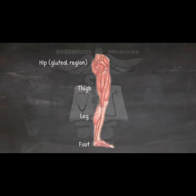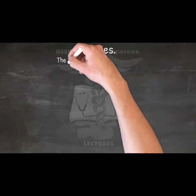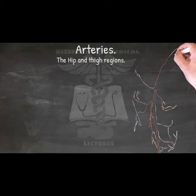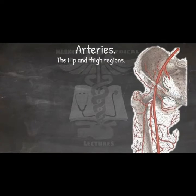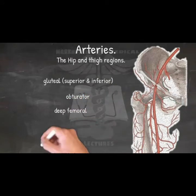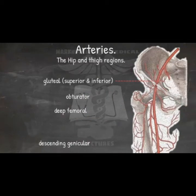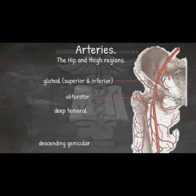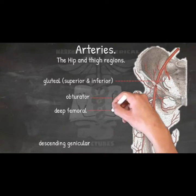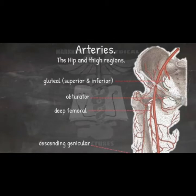Arteries of the hip and thigh regions. In addition to the femoral artery, there are several other important ones traveling through the hip and thigh: gluteal, obturator, deep femoral, and descending genicular arteries. The two gluteal arteries stem from the internal iliac arteries and supply blood to the piriformis, quadratus femoris, and gluteal muscles, as well as the skin over the upper thigh and gluteal regions. The obturator artery also originates from the internal iliac artery and supplies the adductor muscles of the thigh. The deep femoral and descending genicular arteries originate directly from the femoral artery, supplying several muscles of the thigh, gluteal regions, and the knee joint respectively.